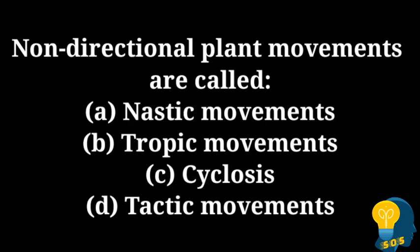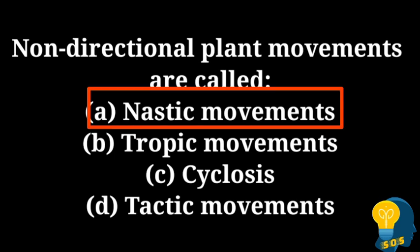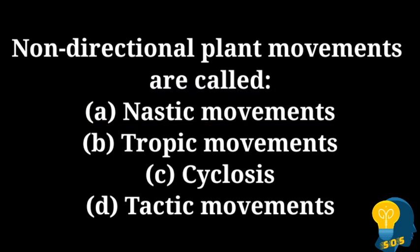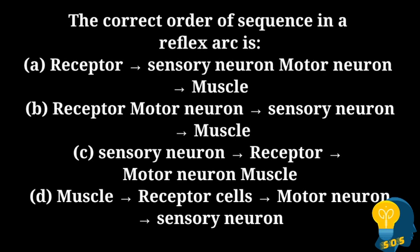The next question is: non-directional plant movements are called? The options are option A: nastic movements, option B: tropic movements, option C: cyclosis, and option D: tactic movements. The correct answer is option A: nastic movements. Non-directional movement is because of nastic movements, whereas directional movement is because of tropic movements.